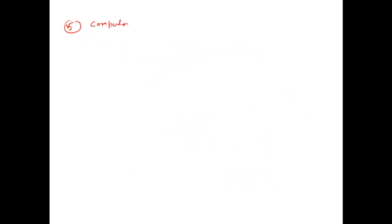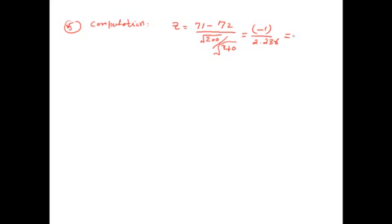In the 5th step, we do the computation and calculate the value of z. x-bar is given as 71, mu-naught is 72, variance is 200 so we take the square root to get s, and n is 40. Calculating this: z equals (71 minus 72) divided by (square root of 200 divided by square root of 40), which equals minus 1 divided by 2.236, giving minus 0.45.